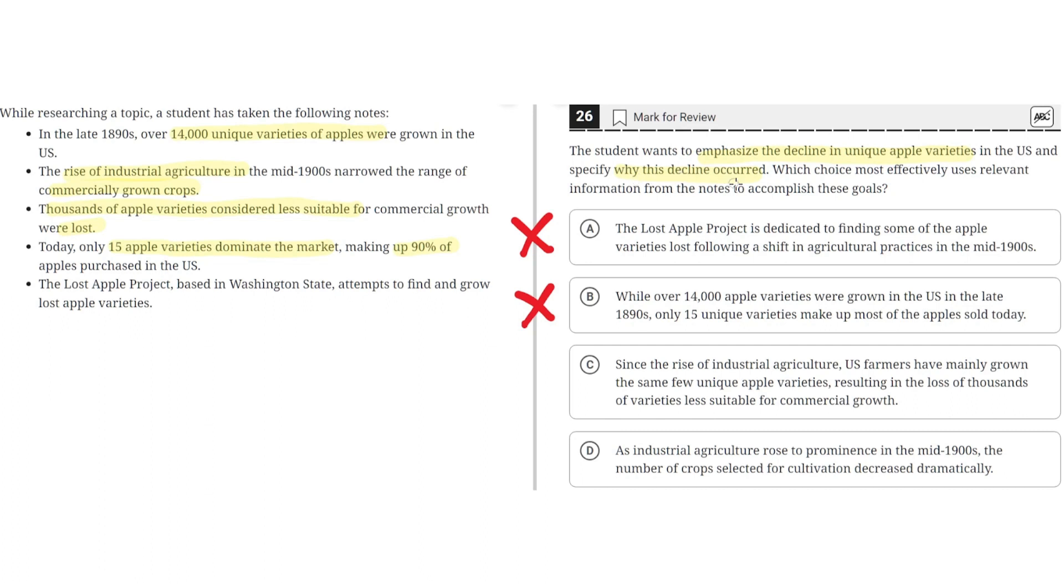And explains why this decline has occurred, which is because U.S. farmers have mainly grown the same few unique apple varieties. So C seems to be the correct answer.